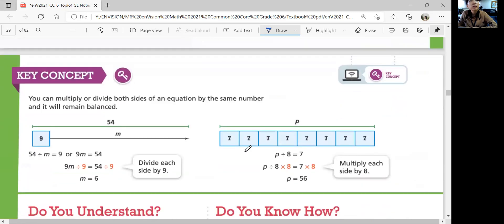So what do we learn in this lesson? You can multiply or divide both sides of an equation by the same number, and it will still remain balanced. It's the division property and the multiplicative property of equality. So in this lesson, we talked about how to write and solve multiplication and division equations. Let's continue the next lesson in the next video. Bye.